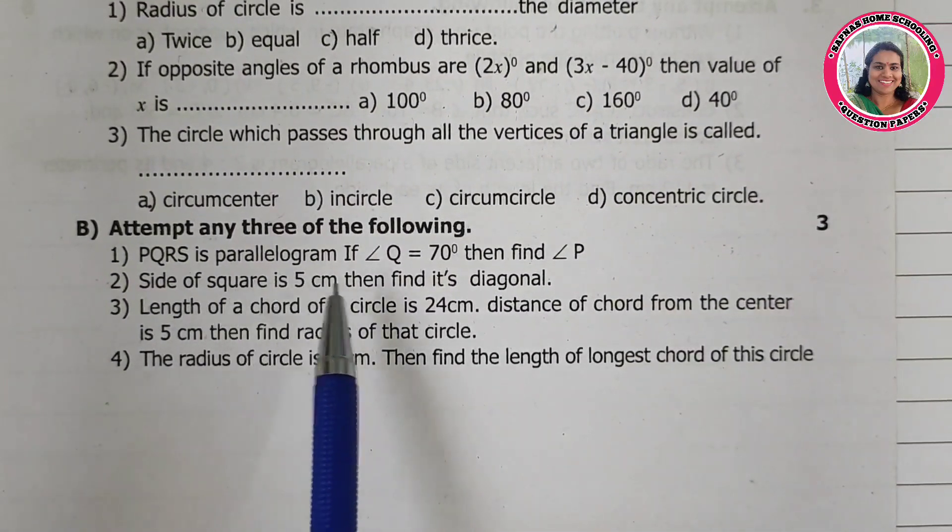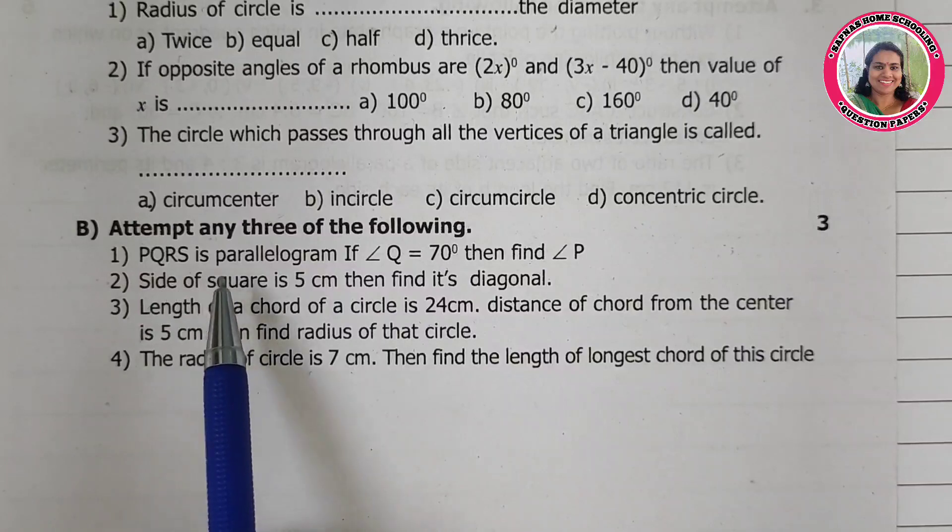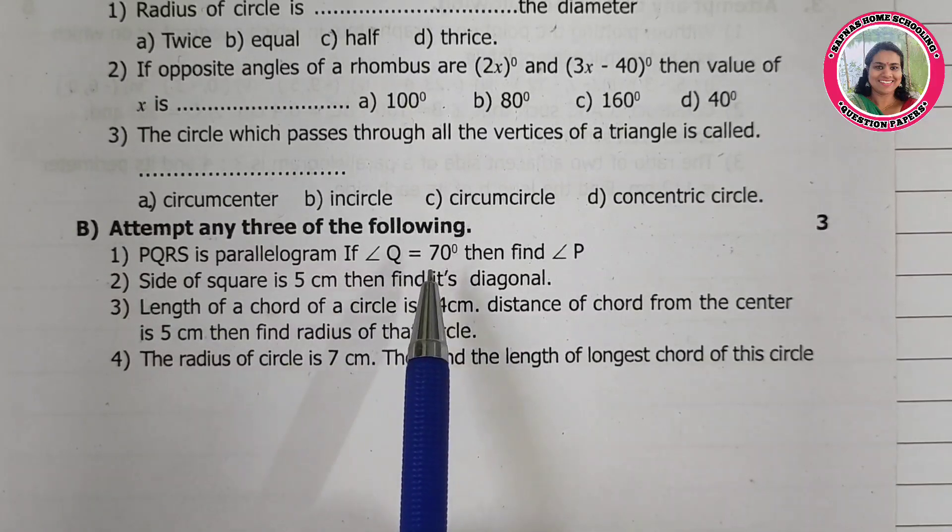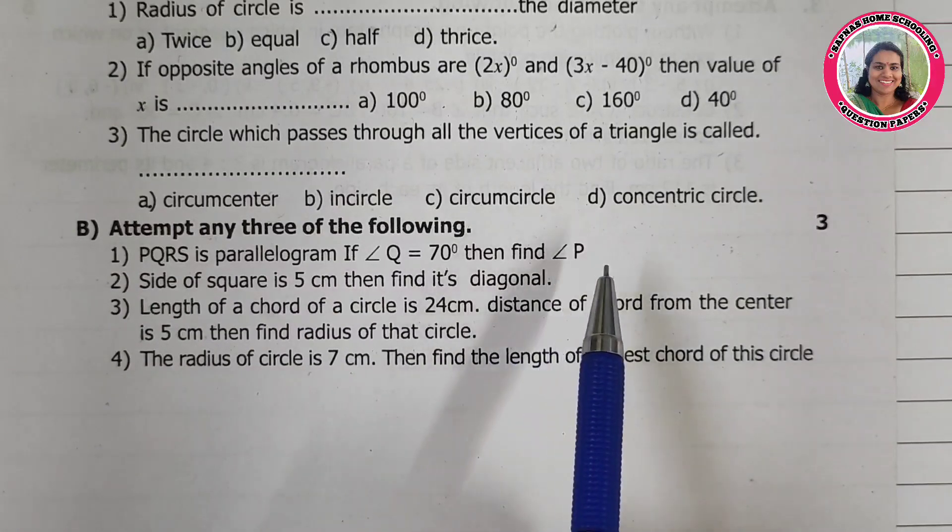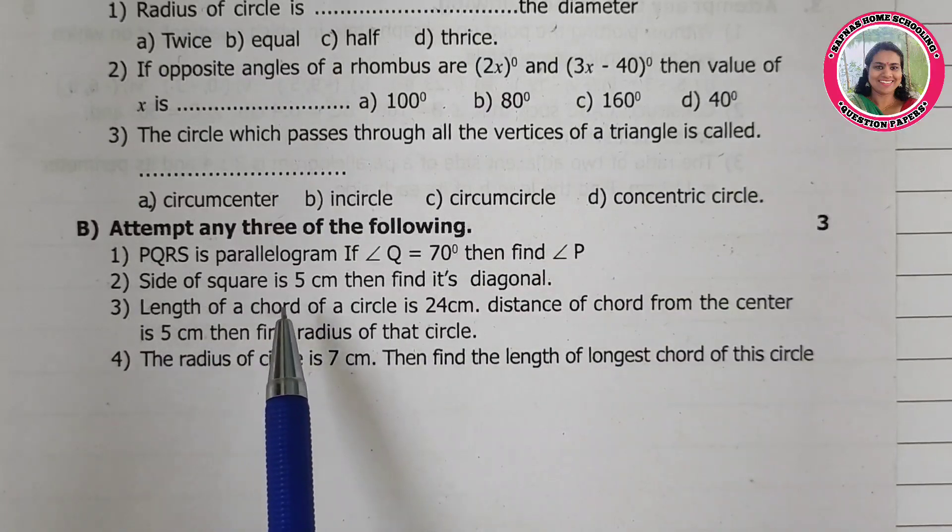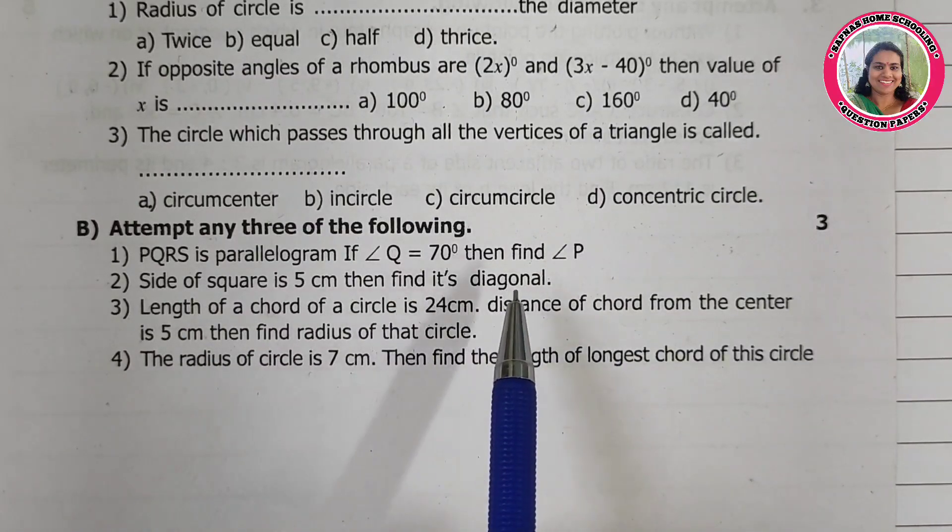Question B: Attempt any 3 of the following. PQRS is a parallelogram. If angle Q is equal to 70 degrees, then find angle P. Side of a square is 5 cm, then find its diagonal.